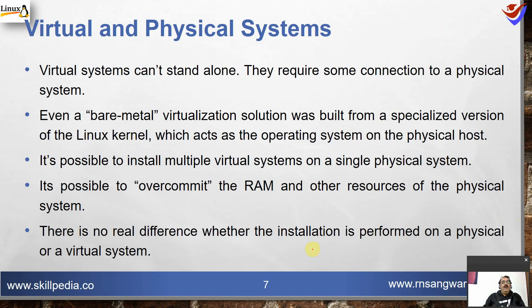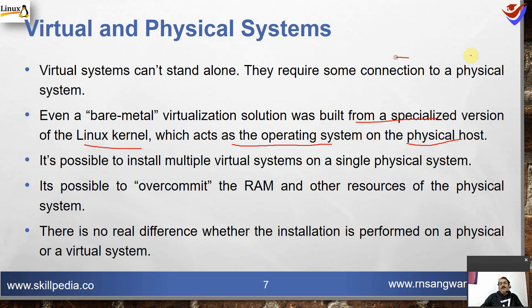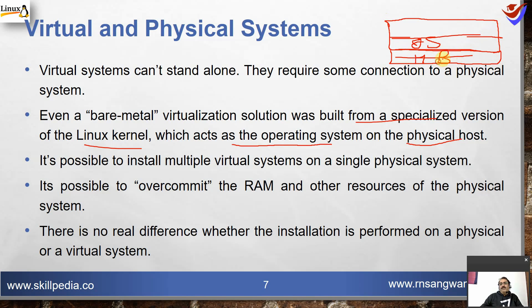Virtual machines can't stand alone — they require some connection to a physical system even with bare-metal virtualization solutions built from a specialized version of the Linux kernel acting as the operating system on the physical host. The physical layer cannot be changed. We have the hardware layer at the bottom, and on top of that we have the operating system as a second layer, whether used as part of the hypervisor or as an independent operating system.